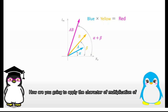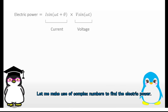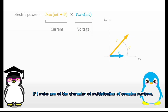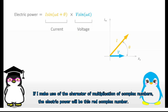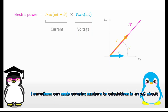How are you going to apply the character of multiplication of complex numbers to find electric power? This is how to find electric power. Let me make use of complex numbers to find the electric power. This complex number is the current, and this is the voltage. If I make use of the character of multiplication of complex numbers, the electric power will be this red complex number. However, I know that the electric power I found right now is absolutely wrong. That's why I'm confused. I sometimes can apply complex numbers to calculations in an AC circuit, but sometimes I cannot.